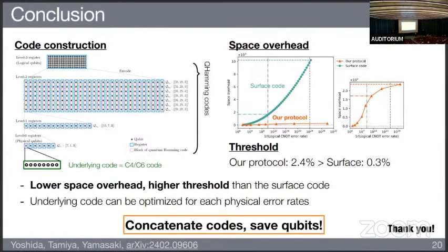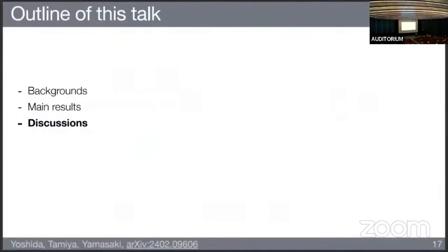Thank you very much for the nice talk. Does anyone have questions? Thank you for the nice talk. In the middle, you compared transversal CNOT in your code with lattice-surgery-based surface code CNOT. Is there a reason why you didn't consider transversal CNOT on the surface code? The reason we consider lattice surgery is that it is the conventional protocol. Many previous works have considered lattice surgery as the conventional protocol, so we wanted to compare our protocol with that conventional approach. That's why we chose lattice surgery.